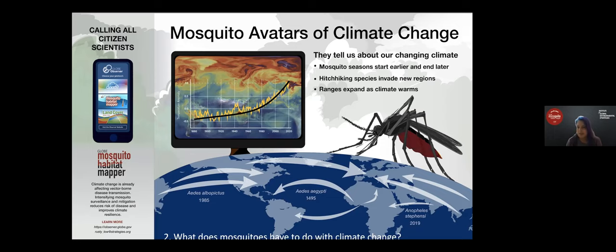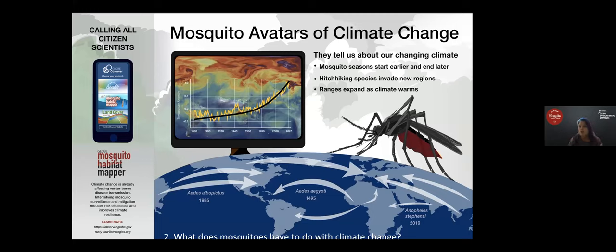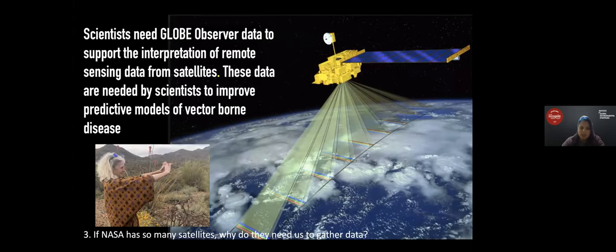The range of the mosquito is expanding — they're able to live further north and south than ever before. By watching mosquitoes and where and when we find them, we're learning about our changing climate. Another question: if NASA has so many satellites, why do they need other data? Satellite data can tell us about rain and temperature worldwide, but we also need to know what's happening on the ground. Citizen science data from NASA programs helps verify that satellite data is being interpreted correctly.